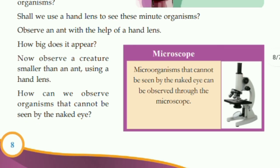Observe a creature smaller than an ant using a hand lens. How can we observe organisms that cannot be seen by the naked eye? For example, bacteria, virus, amoeba, paramecium — there are many such organisms. All these organisms cannot be seen with the naked eye, so we need the help of a microscope.